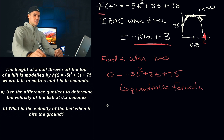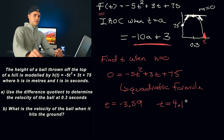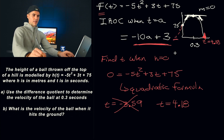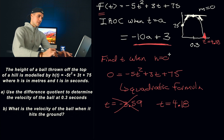Going through the quadratic formula gives two t values: negative 3.59 and 4.18. We ignore the negative value, so the time at which the ball hits the ground is t equals 4.18. In a word problem, time can only be positive, so we use 4.18.